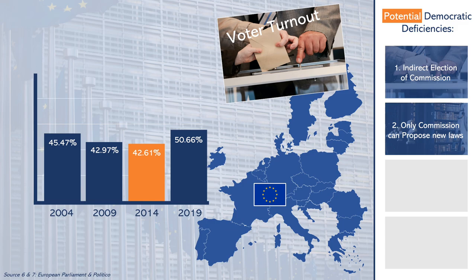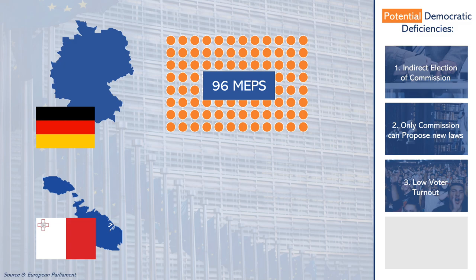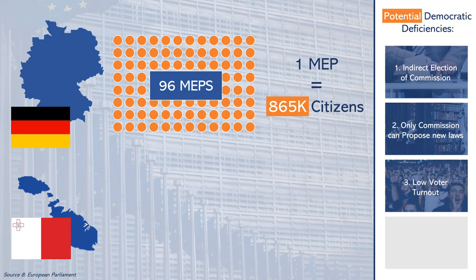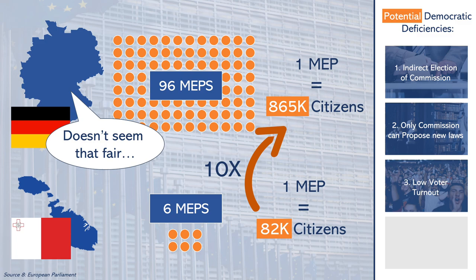Next there is the case of unequal representation in the European Parliament. Germany, the most populous EU country, has 96 MEPs, meaning that 1 MEP represents around 865,000 German citizens. Malta, the least populous country, has 6 MEPs, meaning that 1 MEP represents about 82,000 citizens. This means that Malta is more strongly represented by a factor of 10, which is uncommon for a Parliament. Some of the more populous countries argue that this isn't fair representation.